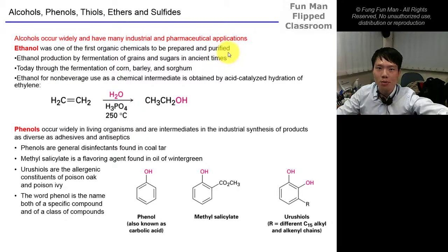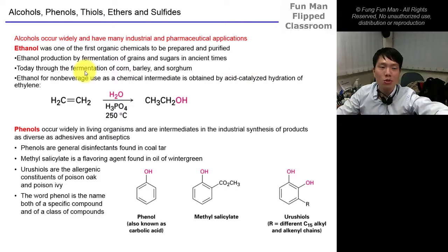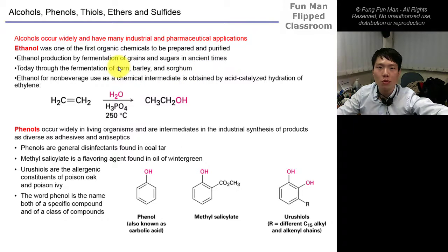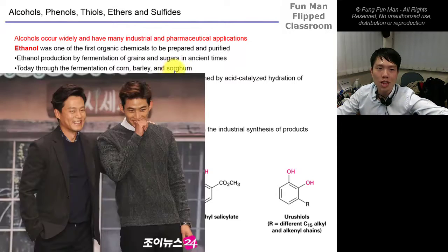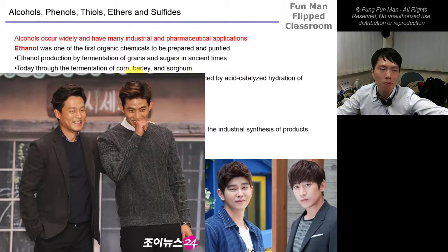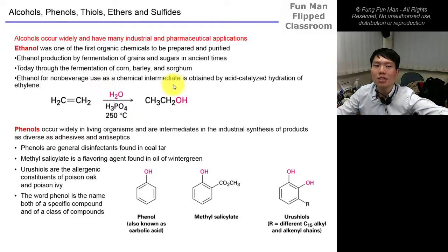Ethanol is one of the first organic chemicals to be prepared and purified — distilled — so that humans can consume it. It is produced by the fermentation of grains and sugars. In ancient times and today, we use corn, barley, and sorghum. There was a debate in Brazil about the government using too much land to generate corn biofuel for export rather than feeding people, raising ethical concerns.